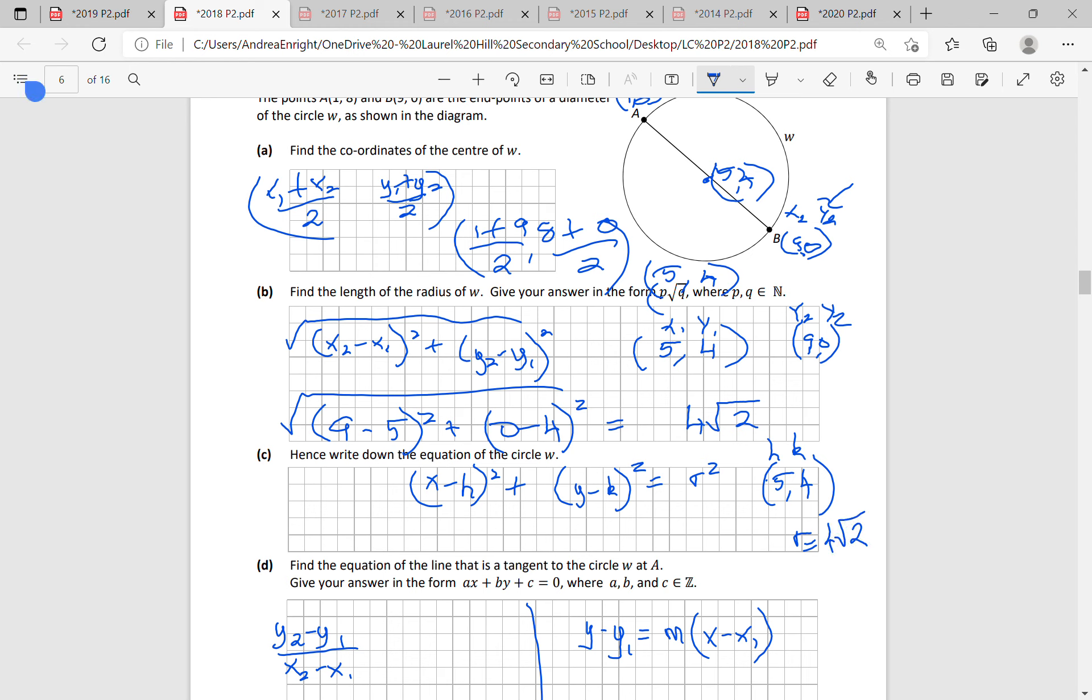So you just fill in x minus 5 to be squared plus y minus 4 to be squared is equal to 4 root 2 to be squared. And then you would leave that exactly as it is. So the next line would read x minus 5 to be squared plus y minus 4 to be squared equals, and you just put 4 root 2 to be squared in the calculator and you get 32.